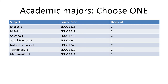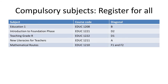This is a professional degree, so there are some compulsory subjects that you need to take. You need to register for each of these: Education 1, Introduction to Foundation Phase, Teaching Grade R, New Literacies for Teachers, and Mathematical Roots. Please note that the last three subjects will not be taught again in 2018, so it is very important to ensure that you pass them this year.